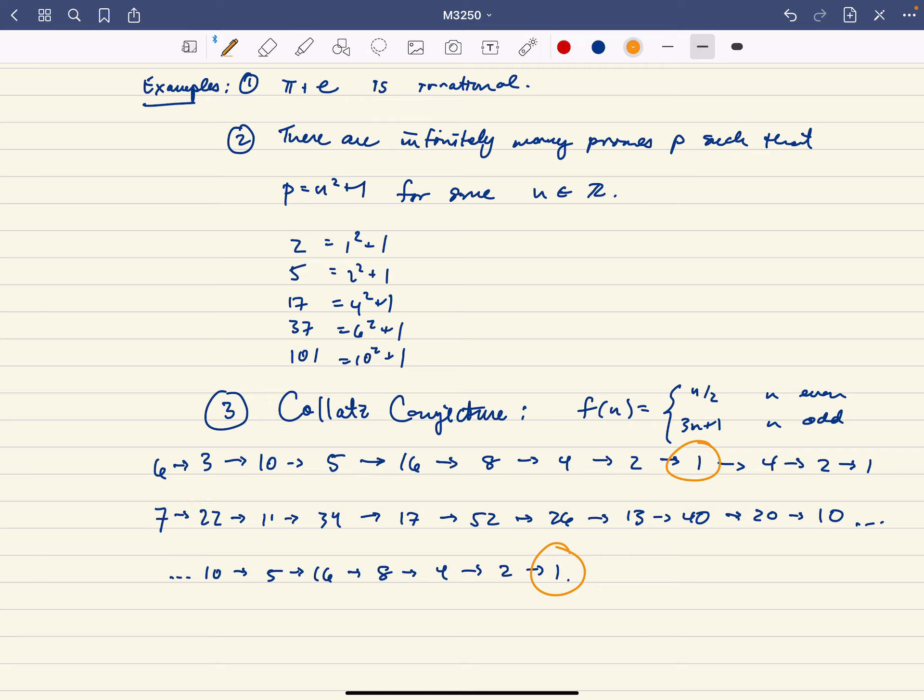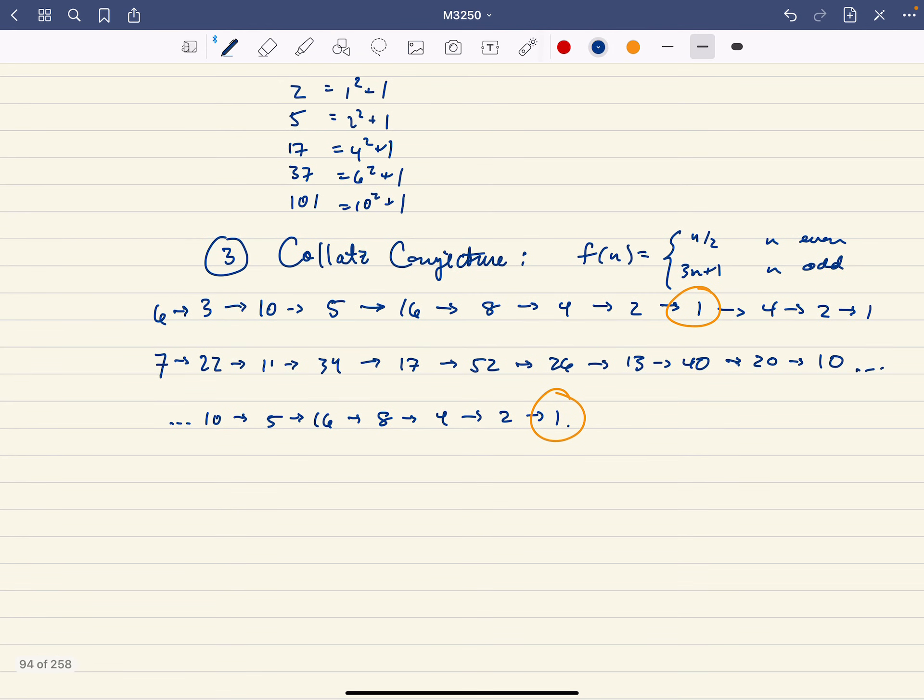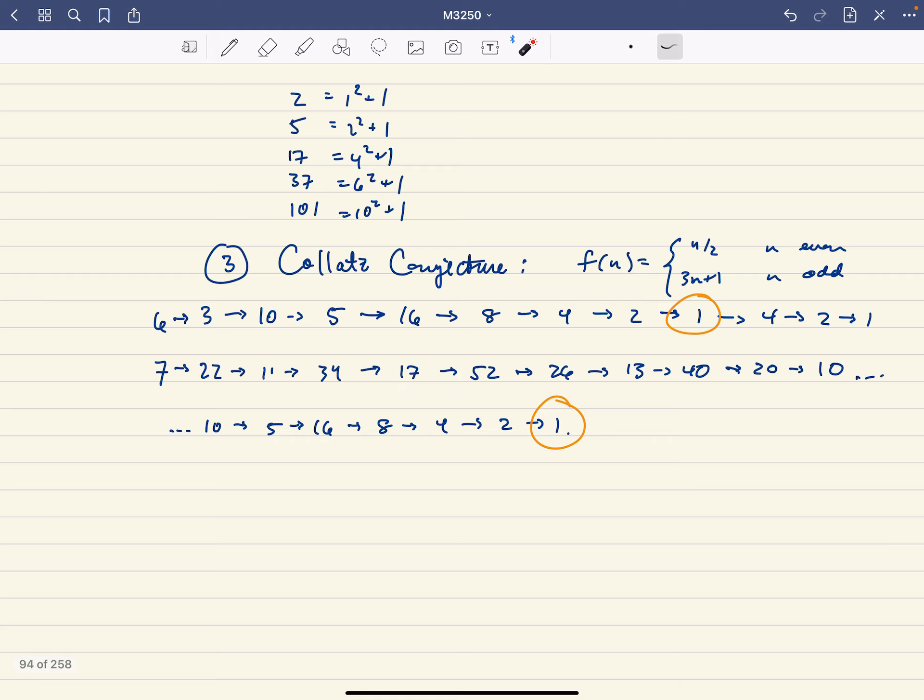This is a conjecture that most people believe is true for a few reasons. One is that there's some deep reasons why this should actually be true. And that involves the fact that this is 3n + 1.